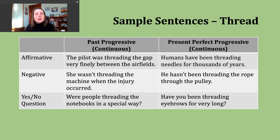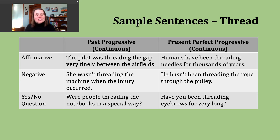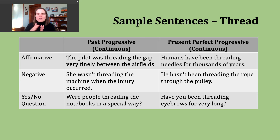I like saying past progressive because it helps remember how we build our verbs — past progressive has two letter P's, so we need two parts to our verb. We use our subject, a past form of be, and then the ing form of the verb. If our subject is I, he, she, or it, use was plus the ing form. If the subject is you, we, or they, use were plus the ing form. Example: the pilot was threading the gap very finely between the airfields — tying back to that definition of being very cautious in a dangerous situation.